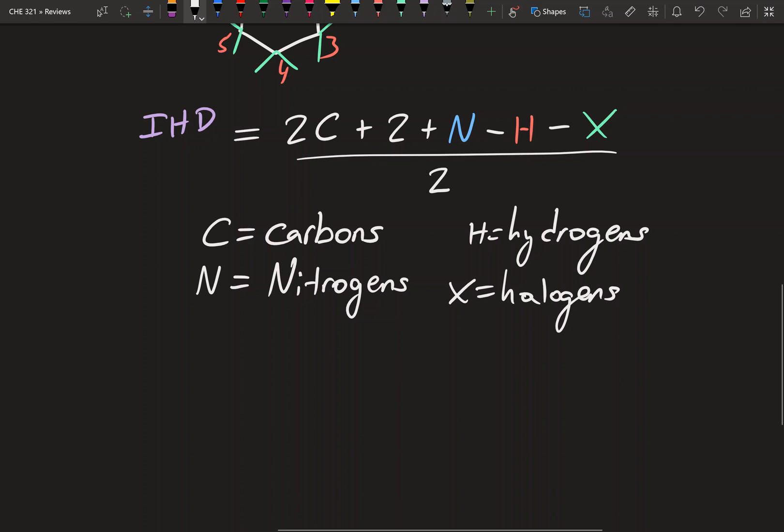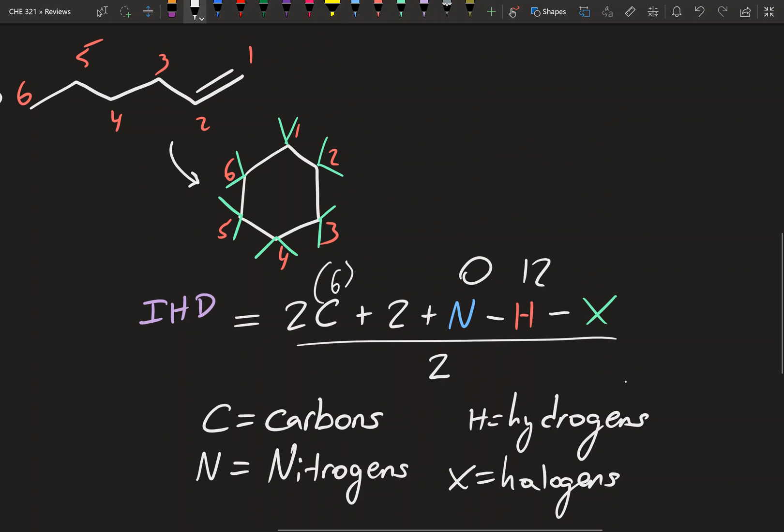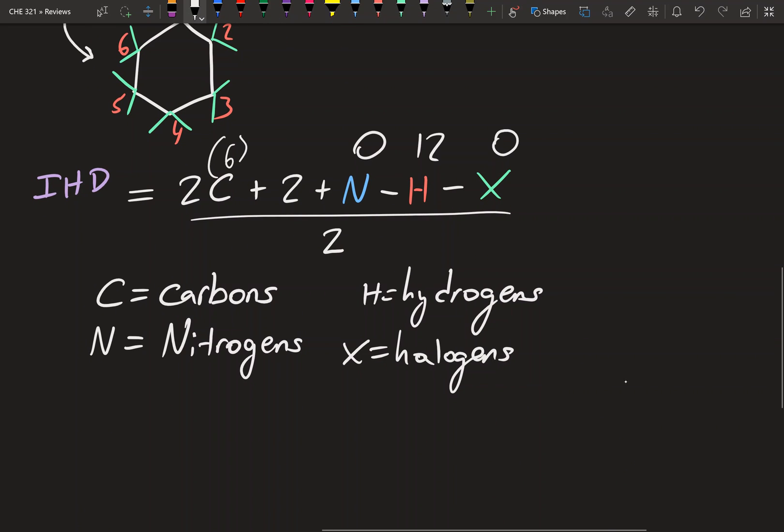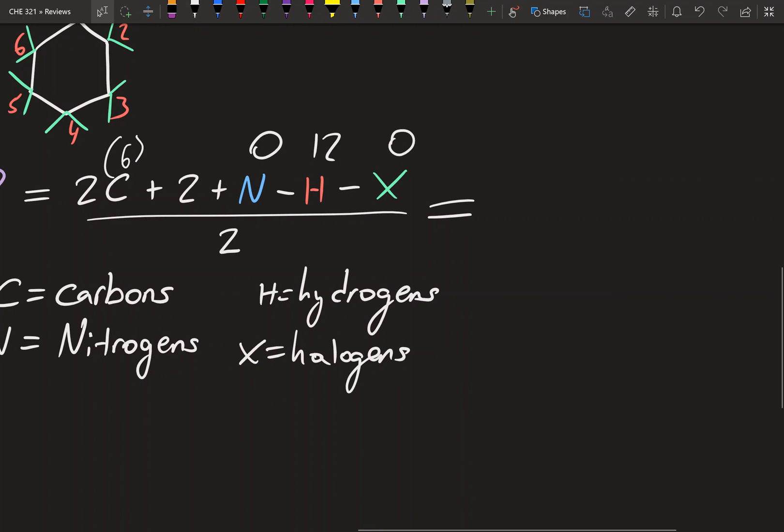So what you do is essentially input the amount you have in each. So if you have 6 carbons, we'd write a 6 here. Plus 2, plus the amount of nitrogens, we have 0. Minus the amount of hydrogens we have, and so we have 12. Minus the amount of halogens, that's 0. And when you input that in and solve, and remember you can't have a calculator in the test, so you're going to have to do this on paper or in your head. You're going to get an IHD of 1.